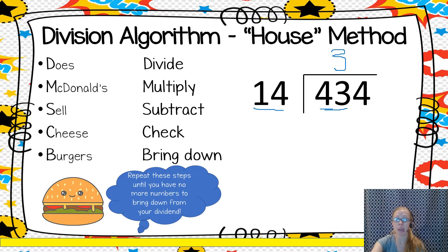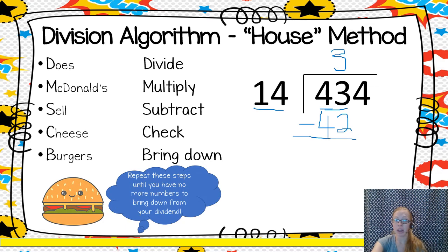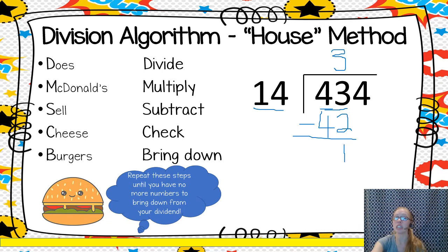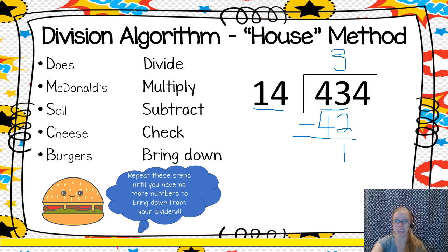Then I multiply — step two — three times 14 to get 42. Step number three is to subtract: 43 minus 42 gives me 1. Then I check. This check step means making sure that the number underneath your subtraction is smaller than your divisor. If it's not smaller, that means you didn't choose a big enough number on top and you need to increase the number you multiplied by. But here, 1 is smaller than 14, so I'm good to continue.